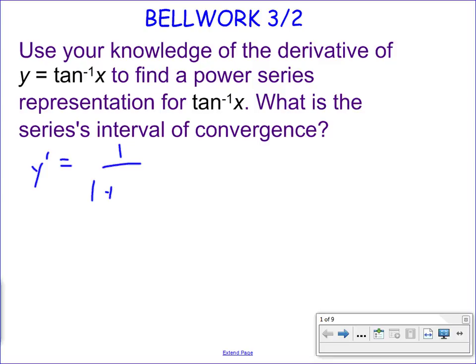Y prime equals 1 over 1 plus x squared. And so we're familiar with the derivative of inverse tangent of x, and this looks close to our general power series representation. We just need to rewrite it so that it was 1 over 1 minus something. And that something is the r in my geometric series, that ratio. So how could I rewrite it so that this is 1 over 1 minus something? What would my something have to be so that it would be equivalent to the derivative of inverse tangent? Danny? Negative x squared.